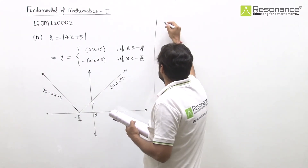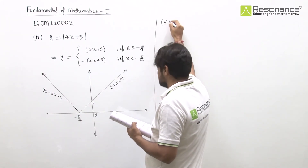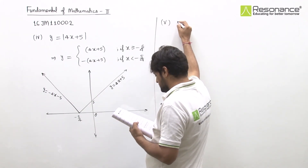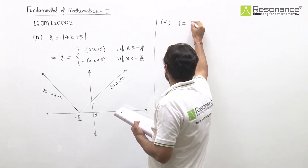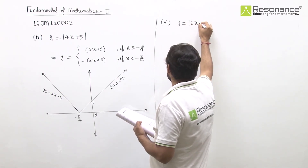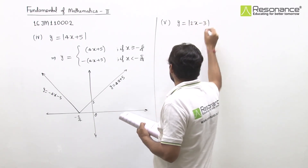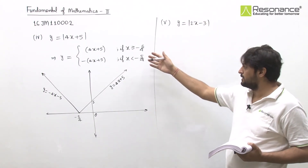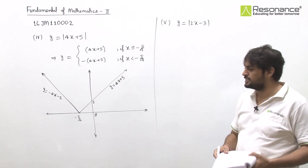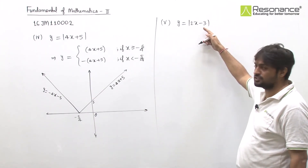Finally, the last part — the fifth one — is y equal to mod of 2x minus 3. The changing point for this is x = 3/2, since 2x minus 3 equals zero at x = 3/2.